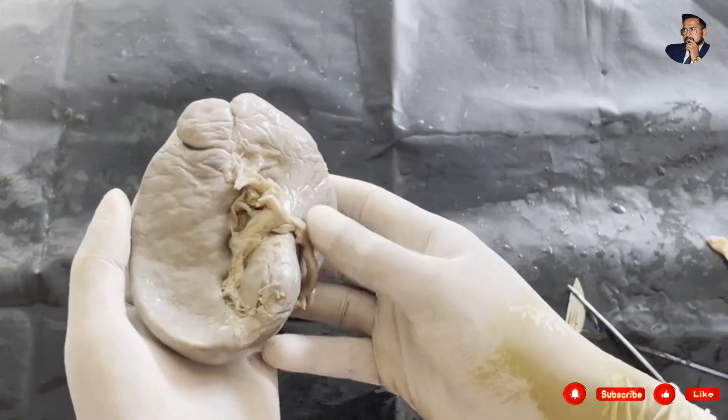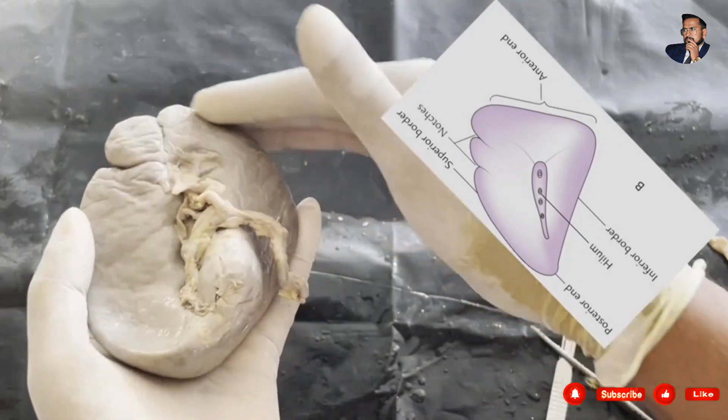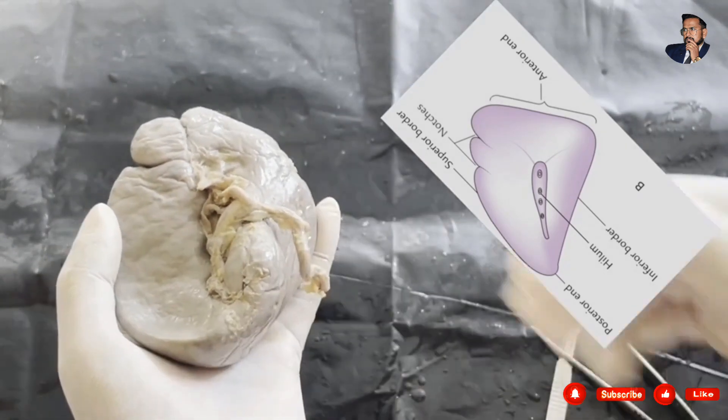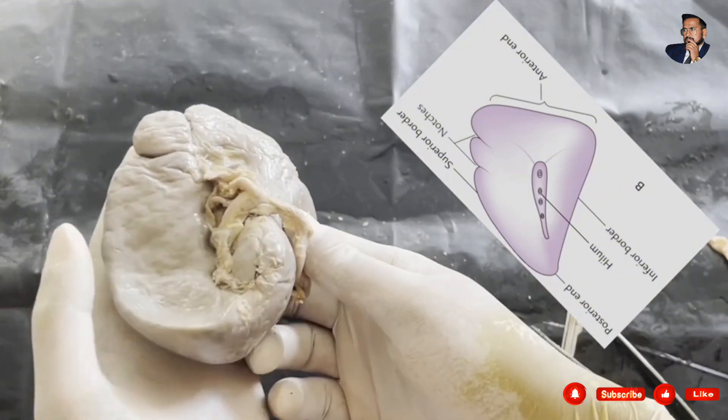We have the external features. It has two ends. This is posterior end which is pointed. This is the anterior end which is broad. The posterior end faces upwards, backwards and medially. The anterior end faces downwards, forwards and to the left.